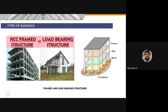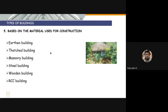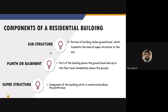Most of our houses constructed a few years ago were load-bearing structures. Nowadays, even for small residential buildings, people have started to use frame structures. Frame structures are much safer against lateral loads — meaning against wind or earthquake. That's the reason why many people are adopting RCC frame structures, and even decades ago for high-rise buildings we have been using RCC frame structures.